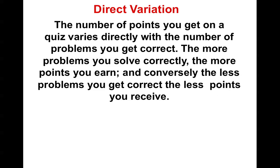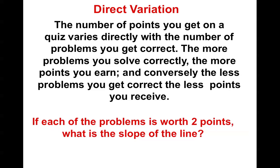So what's that in the real world? The number of points you get on a quiz varies directly with the number of problems you get correct. That makes sense. The more problems you solve correctly, the more you earn. And conversely, the less problems you solve correctly, the less points you receive. If each problem is worth two points, what is the slope of the line? Let's check it out.